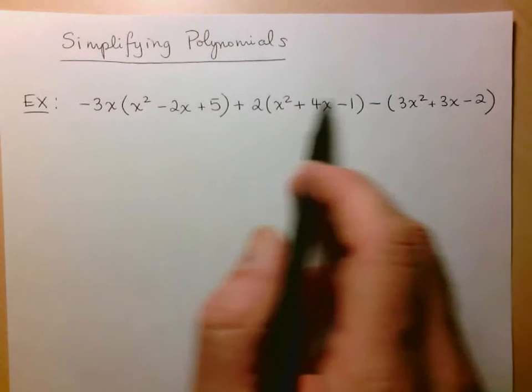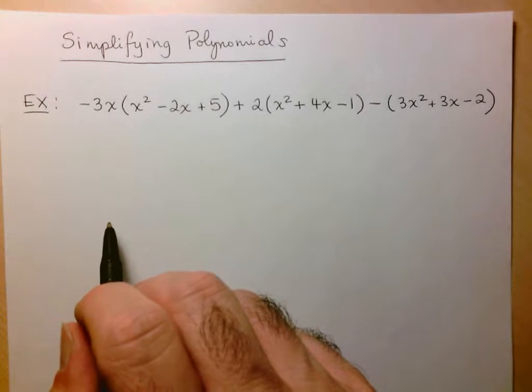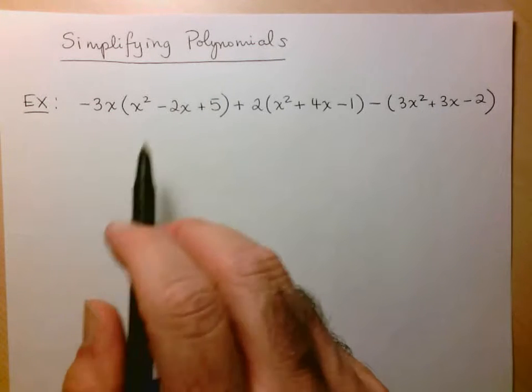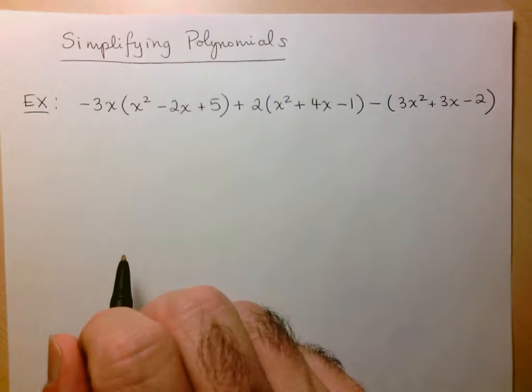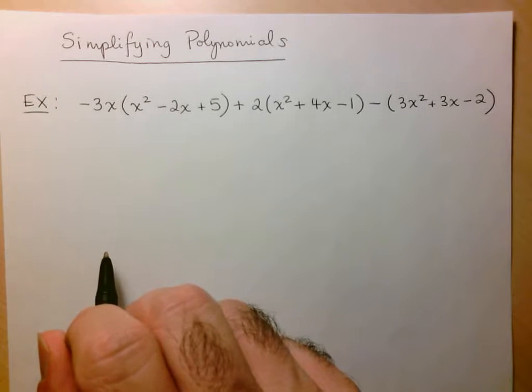So we have this big polynomial expression with lots of operations going on, and we're going to see if we can use our rules to whittle this down to a much more reasonable polynomial.